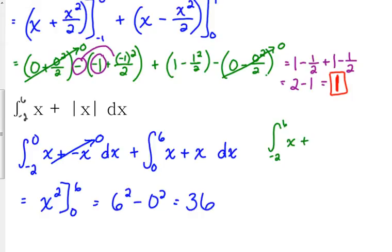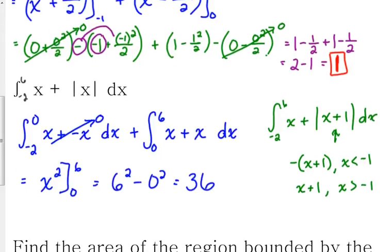What if the problem looks like this: from negative 2 to 6 of x plus the absolute value of x plus 1? This absolute value function, remember we set what's inside the absolute value equal to 0. So this one changes at negative 1. So our integral would split up at negative 1, it would change at positive. Just a little crash course reminder there of those piecewise functions with absolute values.